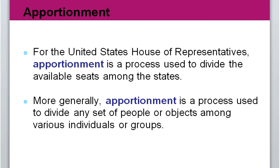In the United States we have the House of Representatives and the Senate. The Senate is set up so that every state regardless of size has two senators, but the House of Representatives is divided based on population — the more populated a state is, the more representatives it has. We're going to look at how to do that fairly, and we'll see it's actually very hard to define what 'fair' means.